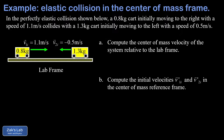The problem is broken up into four parts on a couple of different slides, and we're going to start by finding the center of mass velocity of this system relative to the lab frame. In our initial state, we have a 0.8 kilogram cart moving to the right at 1.1 meters per second, and a 1.3 kilogram cart moving to the left at 0.5 meters per second.